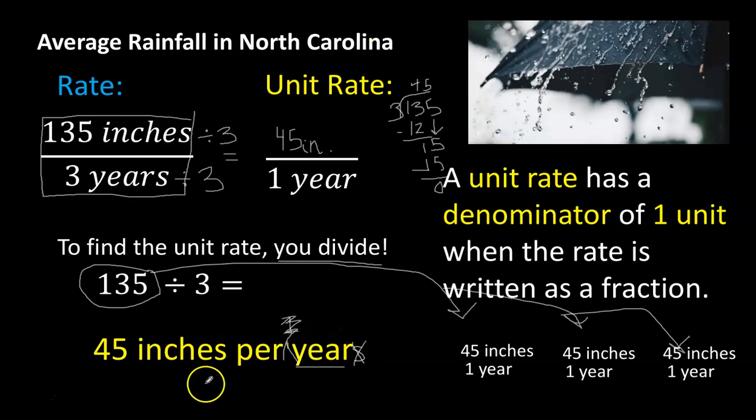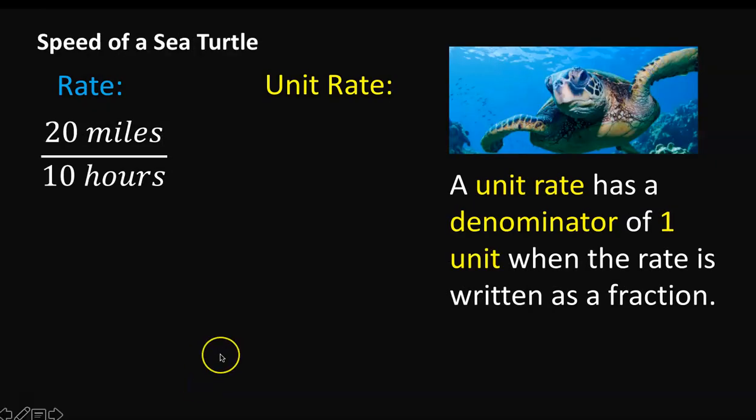We're going to look at one more example together. In this example we're going to be looking at the speed of a sea turtle. The rate we are given is 20 miles per 10 hours. Remember, every rate can be converted to a unit rate. A unit rate has a denominator of one unit when the rate is written as a fraction. So we need the denominator to say one hour instead of 10 hours for it to be a unit rate.